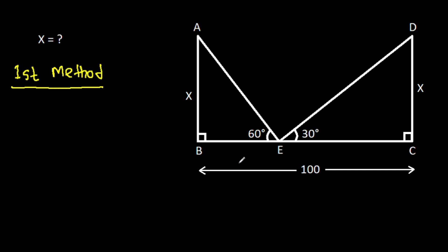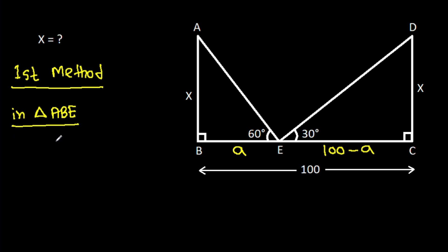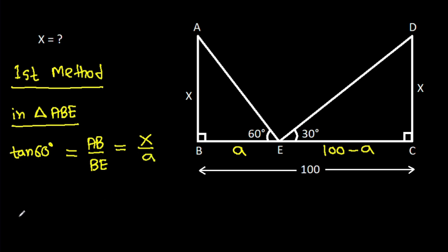Suppose BE is A, then CE will be 100 minus A. And in triangle ABE, tan 60 degrees is AB over BE, that will be x over A. So x will be A times tan 60 degrees.